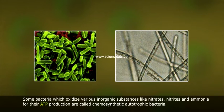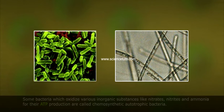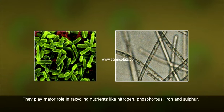Some bacteria which oxidize various inorganic substances like nitrites, nitrates, and ammonia for their ATP production are called chemosynthetic autotrophic bacteria. They play a major role in recycling nutrients like nitrogen, phosphorus, iron, and sulfur.